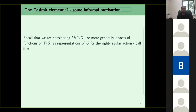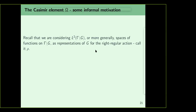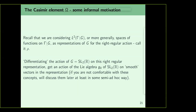Let me give some informal motivation for the Casimir element. We want to look at functions on G mod Gamma and study the right regular action of G on it. G acts on G mod Gamma by right multiplication, and we always use ρ for the right regular action. If you differentiate the action of G = SL2(R) on the right regular representation, there is a way to get an action of its Lie algebra g₀ — not on all vectors in L², but only on smooth vectors.